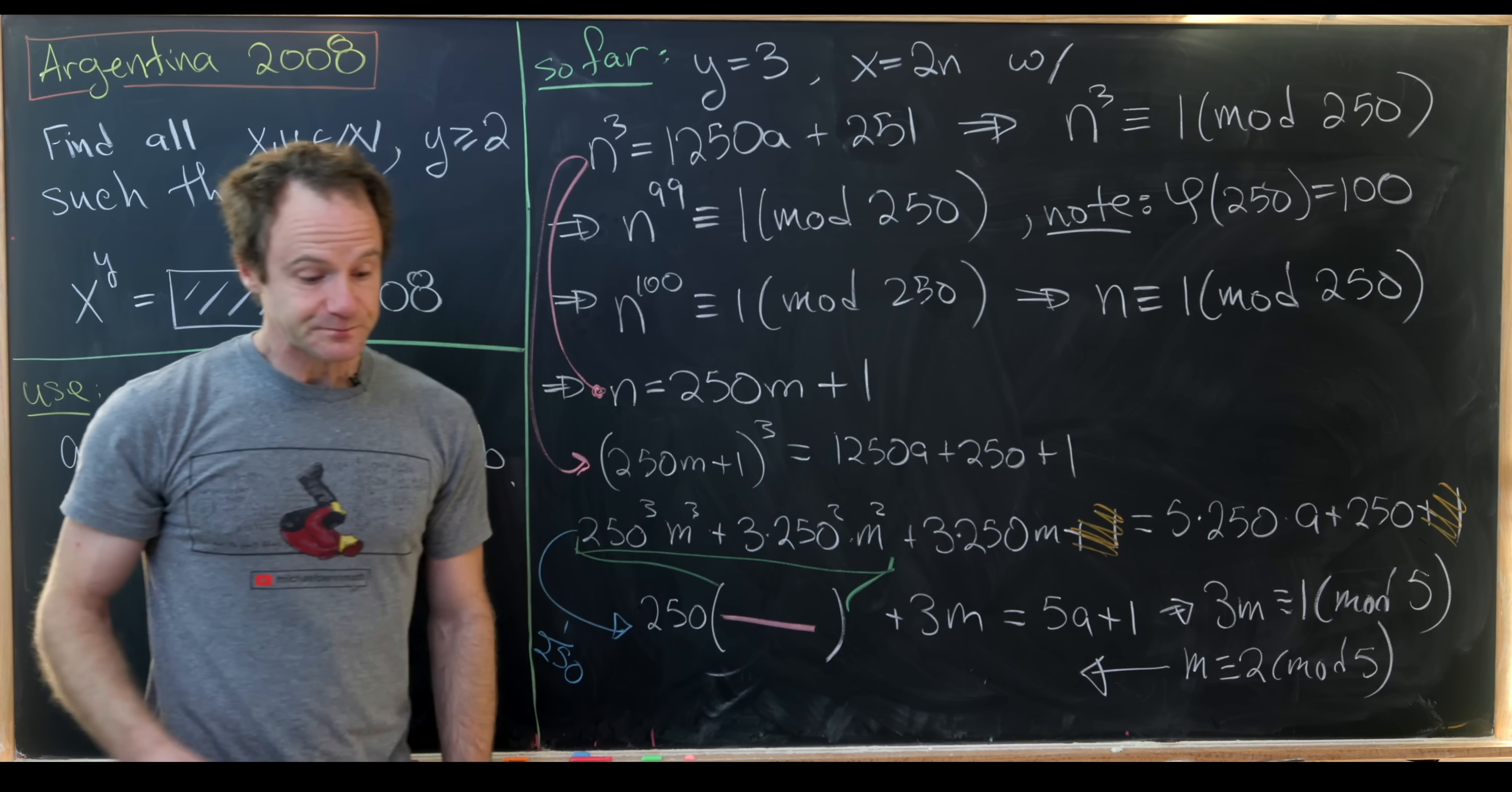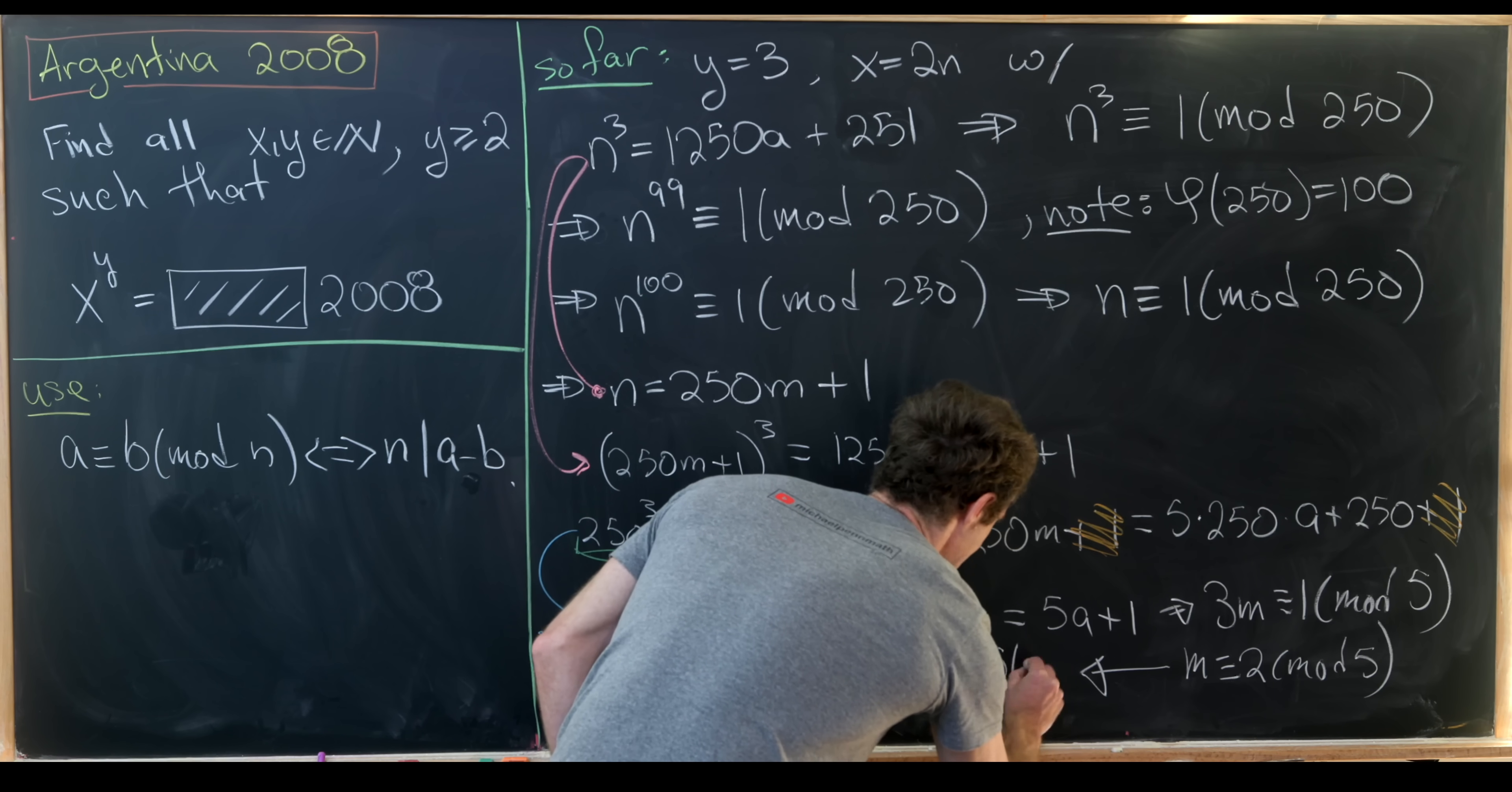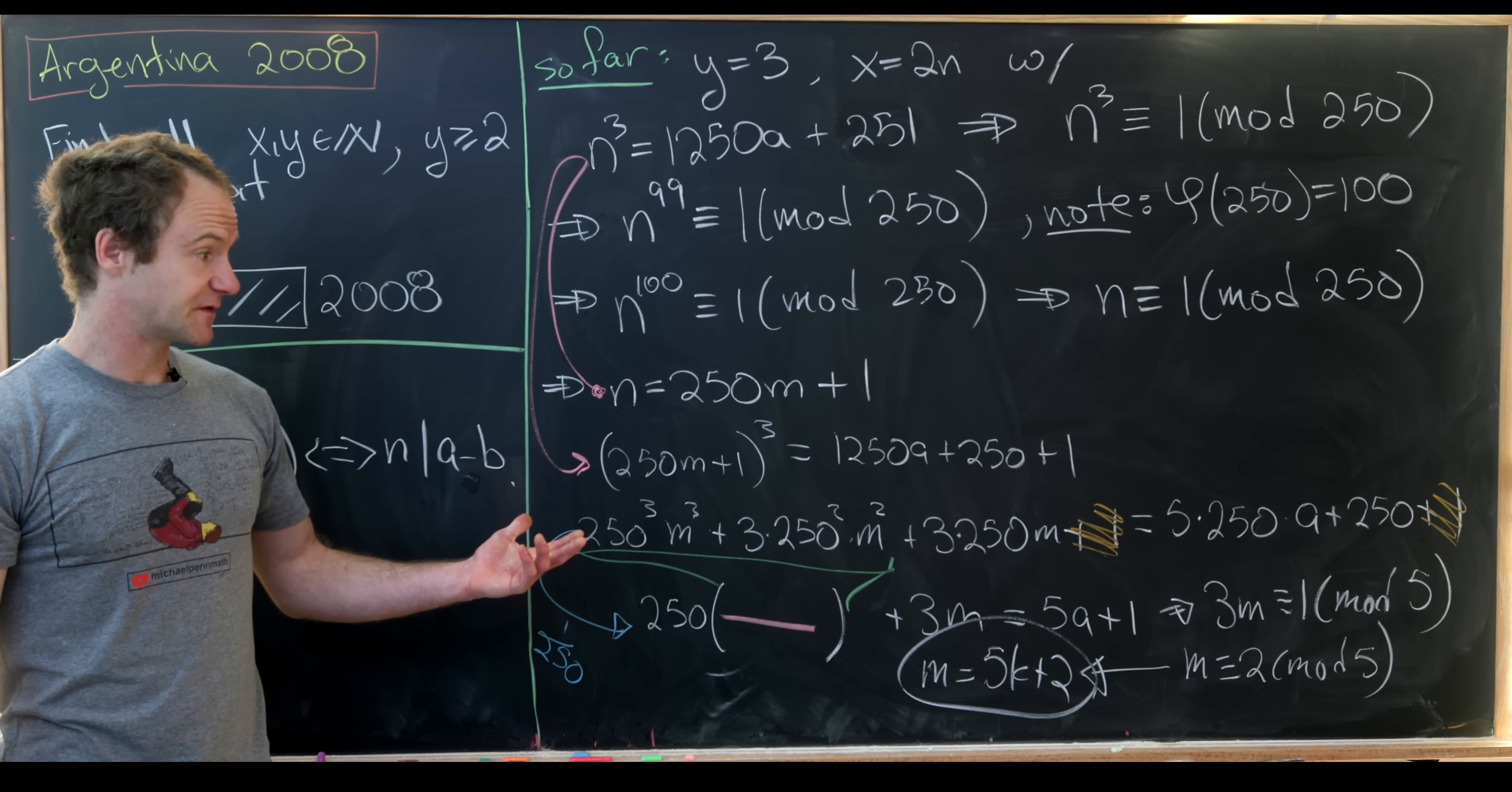But in the end that means that we can write m as 5k plus 2. And that's our final version for m.